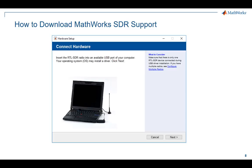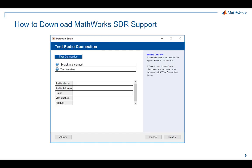Typically, once the support package is installed, you need to perform some hardware setup. Use the Hardware Setup app to automatically configure your USB-based or Ethernet-based radios. As a final stage of the hardware setup, the app can test your radio connection to make sure it can transmit and/or receive properly, removing that burden from you.